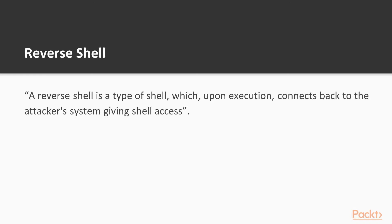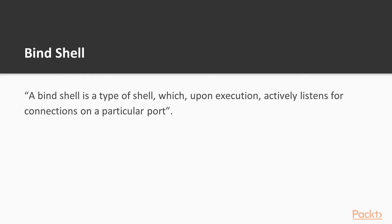Now let me answer some regularly encountered questions. What is a reverse shell? A reverse shell is a type of shell which, upon execution, connects back to the attacker's system, giving shell access. What is a bind shell? A bind shell is a type of shell which, upon execution, actively listens for connections on a particular port. The attacker can then connect to this port in order to get shell access.